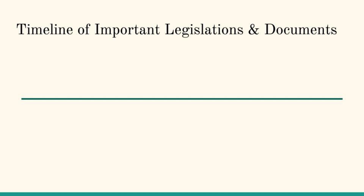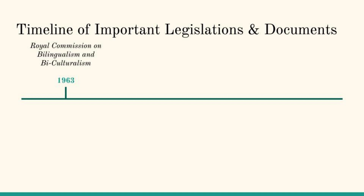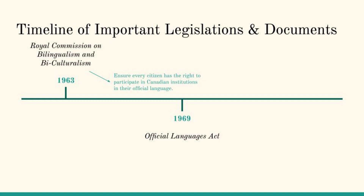Let's review some of the integral legislations and groups that protect the usage of the French language in Canada's education system, specifically in PEI. Noticing the rise in conflict between Anglophone and Francophone communities — especially from French Canadians in Quebec who called for the protection of their language and culture — the federal government established the Royal Commission on Bilingualism and Biculturalism in 1963. This commission ensured every citizen the right to participate in institutions affecting their lives in their official language, such as education. Following this, the Official Languages Act was passed in 1969, requiring the federal government to serve Canadians in either English or French, bringing forth improvements to FSL teaching with financial assistance from the federal government.